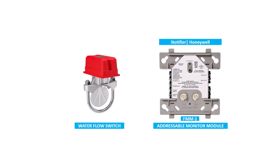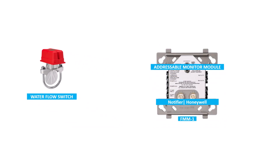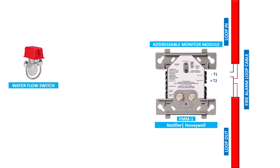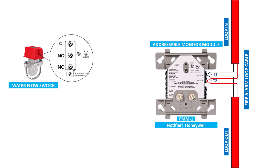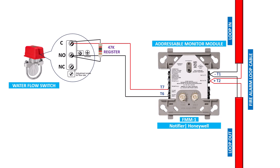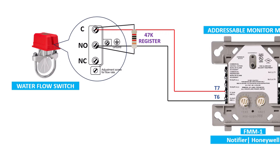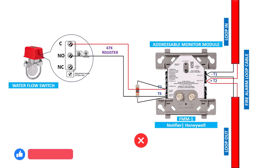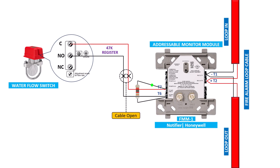Now we will understand the wiring connection between the water flow switch and the monitor module. Here we have taken the Notifier monitor module MM1. The loop cable of the fire alarm is connected to the T1 and T2 terminals of the monitor module. The cable from the water flow switch connects to the T7 and T6 terminals of the monitor module. At the flow switch, the connection is made at the common and NO terminals, and the EOL resistor — with a value of 7k ohms as defined by the manufacturer — is also installed at the common and NO terminals of the device. If the resistor is installed at the monitor module terminal instead, any open or short in the cable between the device and module will not be detected.